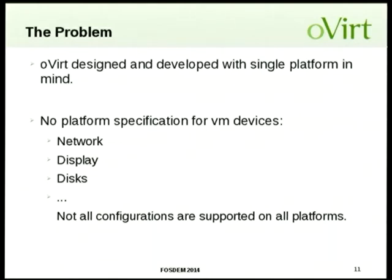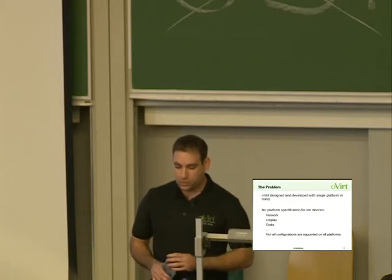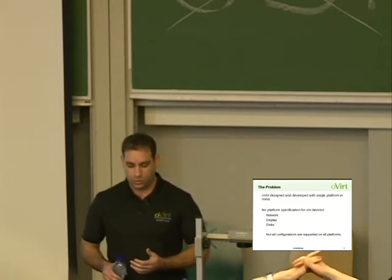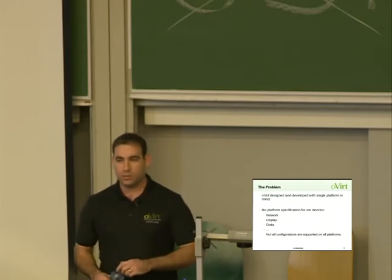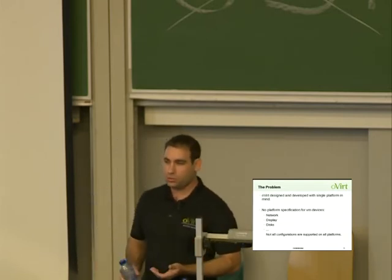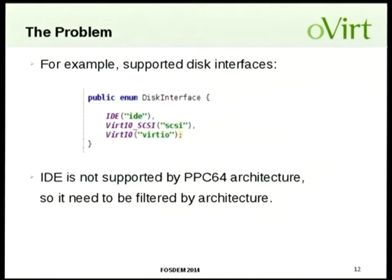What problems did we have to deal with? First, oVirt was designed and developed with a single platform in mind — only x86 was supported for KVM. There was no platform specification. For example, VM devices like network, display, and disk — just as in the physical world — are not all supported on all platforms. For instance, in oVirt you can have disk interface IDE, virtio, or virtio-SCSI, but PPC64 doesn't support IDE, so we had to filter out that option to block users from attempting to use it on PPC.